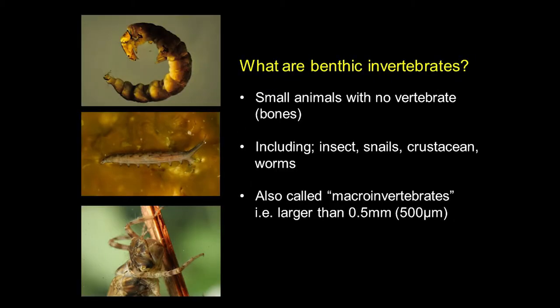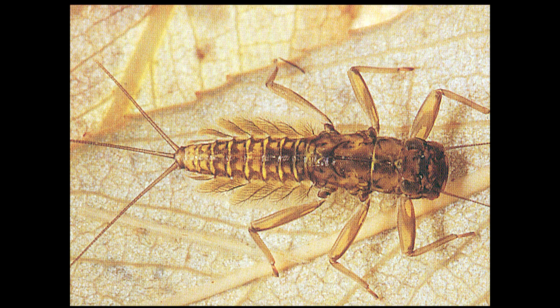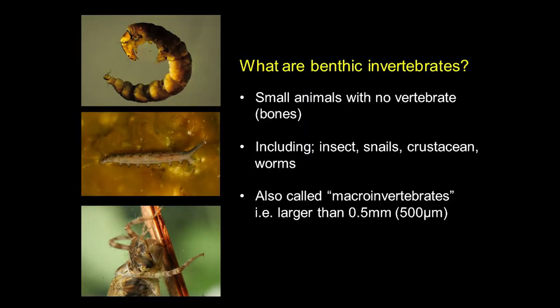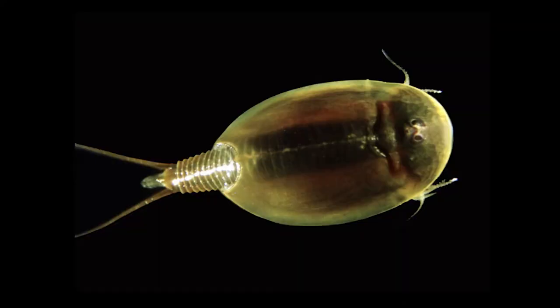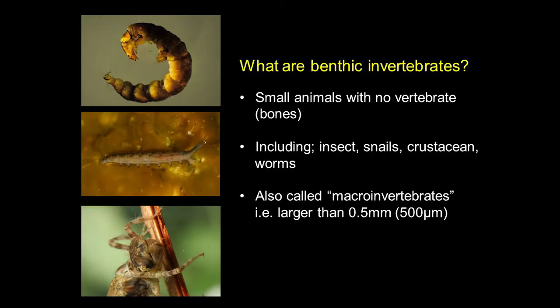What are benthic invertebrates? Well, these are animals that don't have backbones — they have no vertebrae. They're generally small and they range only from about a millimeter in size up to several centimeters. They include things like insects, snails, worms, crustacea, and a whole bunch of other types of very small animals.